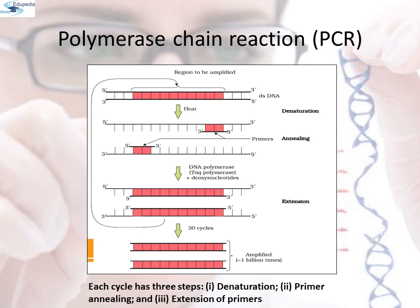This is the diagrammatic representation of the Polymerase Chain Reaction. Each cycle has three steps. The first step is the denaturation phase, in which both strands of the DNA are separated. The second phase is the primer annealing phase, where the primer anneals to the template DNA. The third phase is the extension of primers, where the primer is extended by DNA polymerase using other deoxynucleotides.